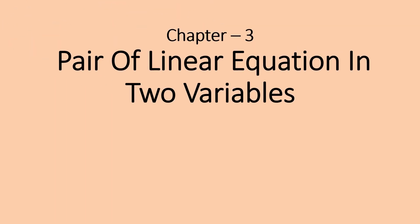Good morning children. Welcome to the second session of Chapter 3, Pair of Linear Equations in Two Variables. In the previous session, we discussed the general form: a1x + b1y + c1 = 0 and a2x + b2y + c2 = 0, where a1, a2, b1, b2, c1, c2 are real numbers such that a1² + b1² ≠ 0 and a2² + b2² ≠ 0. We also discussed that a pair of linear equations can be solved by two methods: graphical method and algebraic method.